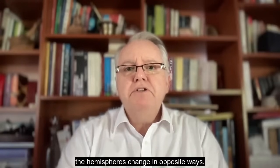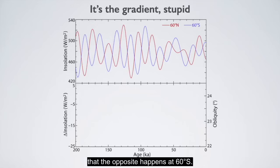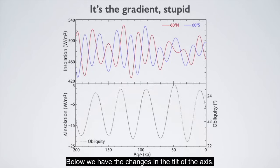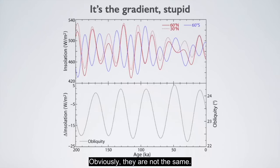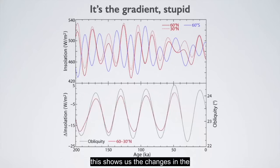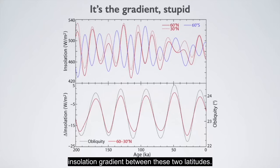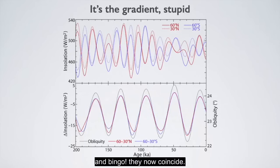Only seasonal insolation changes, not global annual insolation, and the hemispheres change in opposite ways. In this figure, shown in red is the change in insolation for the month of July at 60 degrees north. The opposite happens at 60 degrees south, shown in blue — not the ideal situation to change the climate of the whole planet. Below we have the changes in the tilt of the axis. Looking at the difference in insolation between 60 degrees north and 30 degrees north reveals the changes in the insolation gradient between these two latitudes, which coincides with changes in the tilt of the axis. Repeating the process for the southern hemisphere gives the same result.